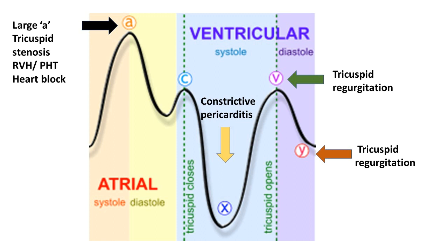In constrictive pericarditis, the heart is surrounded by a thick pericardial case, making it difficult for blood to enter the heart since the pressure from the thick pericardium is high. The only point where blood will rush rapidly into the right atrium is when the ventricle becomes small. You can see in the diagram that X descent happens during ventricular systole — when the ventricle size becomes smaller, blood suddenly gushes from the internal jugular vein into the right atrium, causing a prominent X descent in constrictive pericarditis.